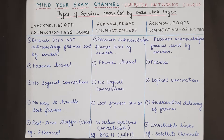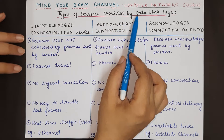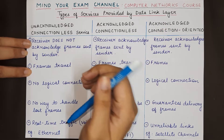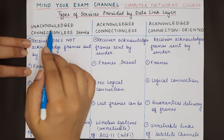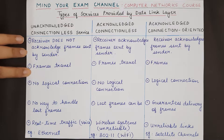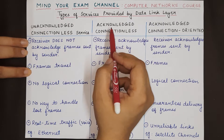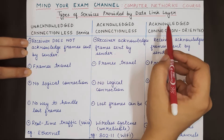Hello everyone, welcome to my channel Mind Your Exam. In this video we will be studying about the three types of services provided by the data link layer to the layer above it, the network layer. The three kinds of services are: unacknowledged connectionless service, acknowledged connectionless service, and acknowledged connection-oriented service.